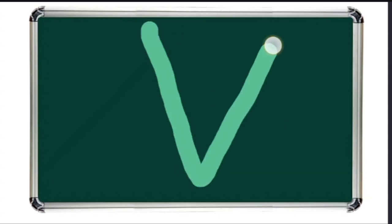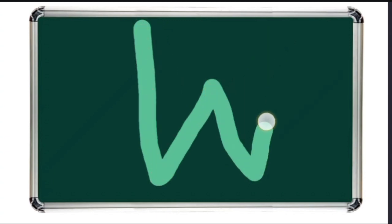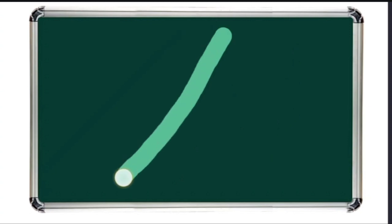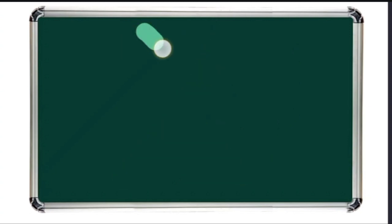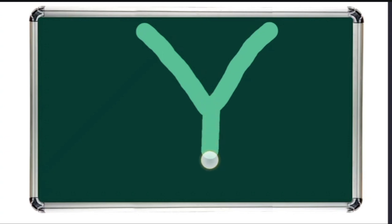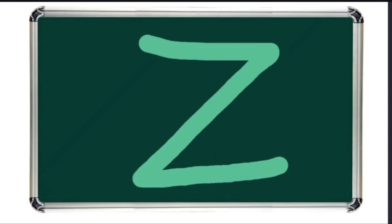V for vein. W for watch. X for xylophone. Y for yak. Z for zebra.